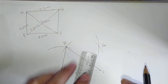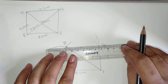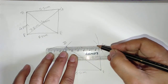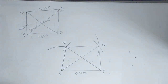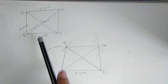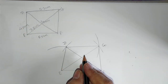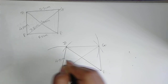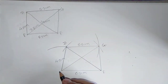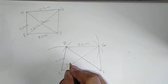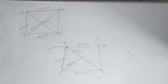Join point G to point F, point D, and point E. This is the actual quadrilateral as per the given measurements. Give the measurements: DE is 4.5 cm, DG is 5.5 cm, EG is 7.8 cm, DF is 7.2 cm. This is the required figure.